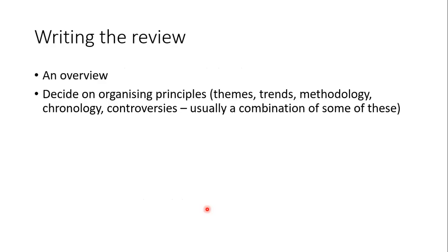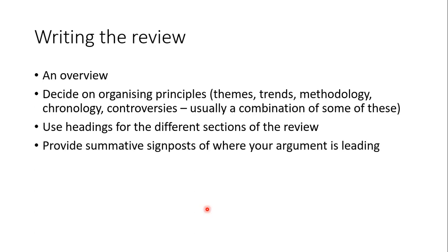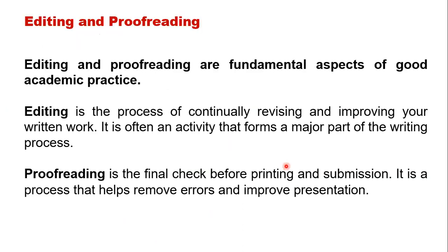When writing the review, get an overview based on organizing principles. It could be themes, trends, methodology, chronology, or controversies — and you can use a combination of some or all of them. Try to use headings for different sections of the review; this gives a clear picture and puts your review of literature in proper perspective. Provide summative signposts showing where your argument is leading — there should be an introduction, a body, and a conclusion. Each step in review of literature should focus you more towards your research question. You need to summarize your review, highlight the gaps in research, and then perform editing and proofreading.